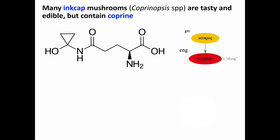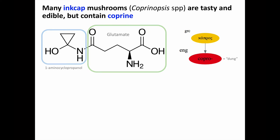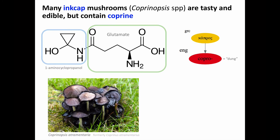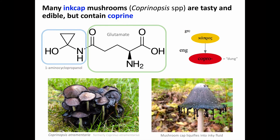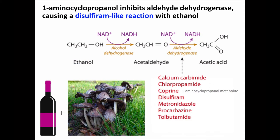The next class of poisonous mushrooms are those that can cause a disulfiram-like reaction. Many ink cap mushrooms are tasty and edible but contain coprine, which is composed of glutamate attached to 1-aminocyclopropanol. The 1-aminocyclopropanol metabolite formed from coprine inhibits aldehyde dehydrogenase, which can result in a disulfiram-like reaction when eaten along with ethanol. The caps literally dissolve into a dark, inky fluid over a matter of hours — which is why these mushrooms are called ink caps.